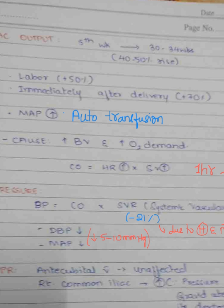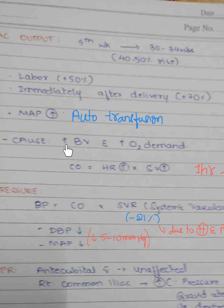During labor, there is a 50 percent increase in cardiac output, and immediately after delivery there is a 70 percent increase. This is due to auto-transfusion of blood, which is the squeezing of blood from the uterus into the maternal circulation during labor and in the immediate postpartum period. The main cause of increased cardiac output during and after delivery is this auto-transfusion, driven by increased blood volume and increased oxygen demand.